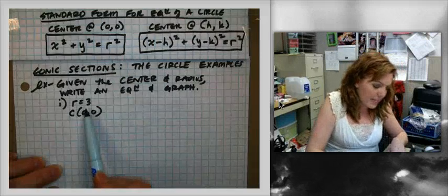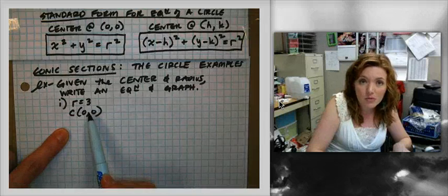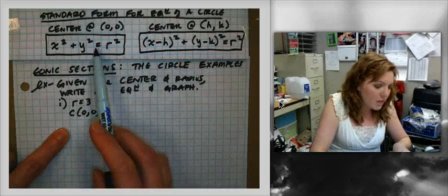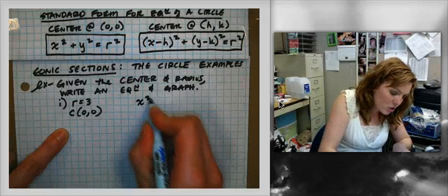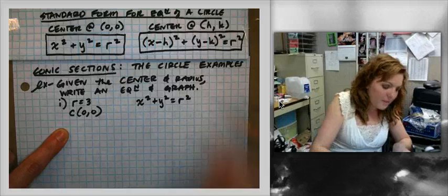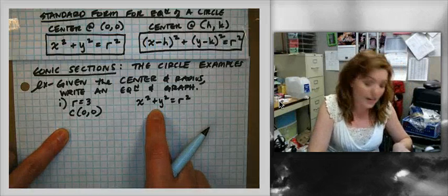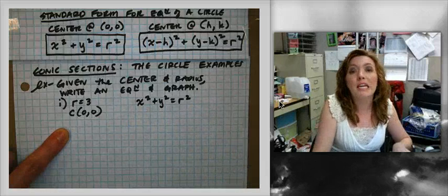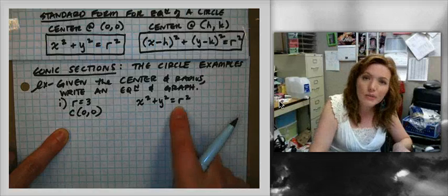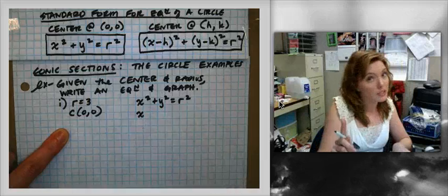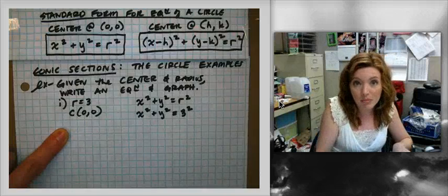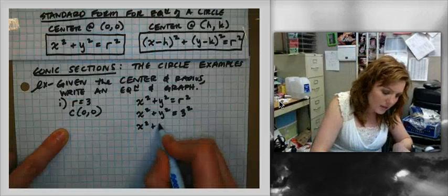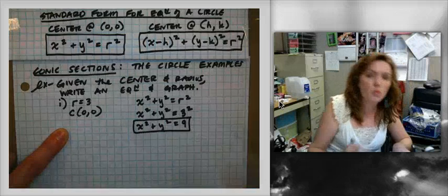This first example: r equals 3, so the radius is 3 and the center is at (0,0). Standard form for the equation of a circle with center at (0,0) is x squared plus y squared equals r squared. There's nothing being subtracted from or added to x and y individually, which takes care of the center at (0,0) part. We take the radius and plug it in: x squared plus y squared equals 3 squared, which simplifies to x squared plus y squared equals 9.